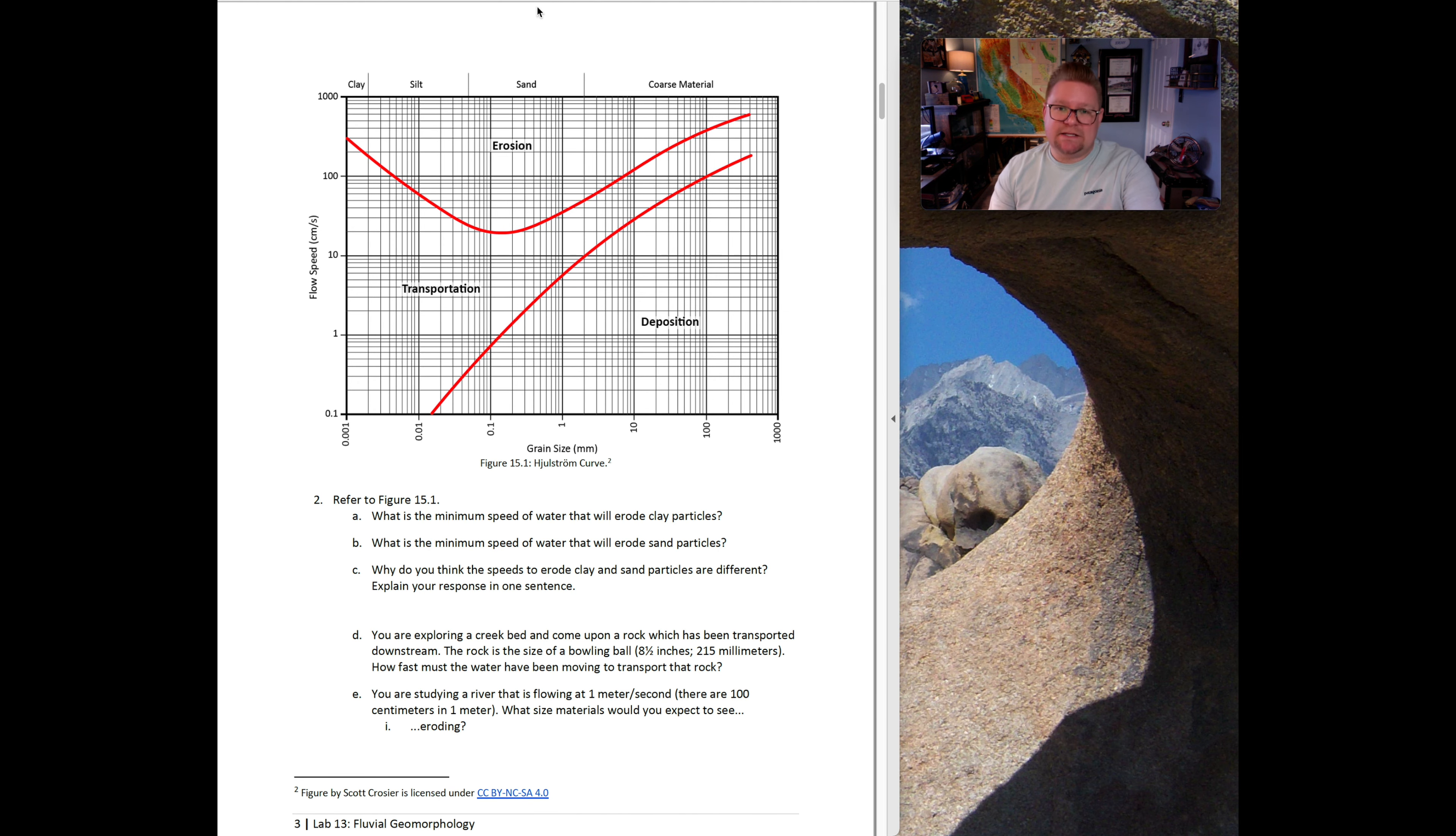For question two, it's having you look at this diagram and answer specific questions, such as what is the minimum speed of water that would erode a clay-sized particle or a sand-sized particle. Letter E is a little more complicated because it's having you interpret it at different values. It says imagine you're studying a river moving about one meter per second. What material size would you expect to see that is eroding, transporting, depositing, or even bed load. You might have to convert the flow speed, then look at those little pockets for erosion, transportation and deposition, so you'll be able to easily answer those attributes.